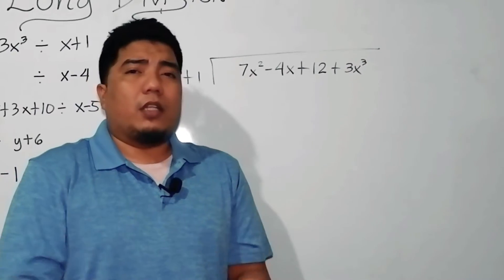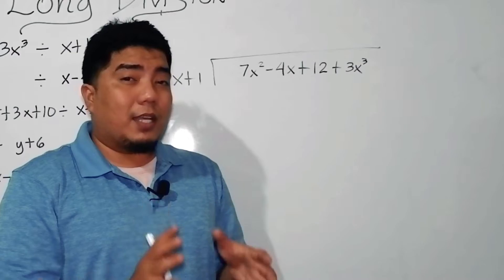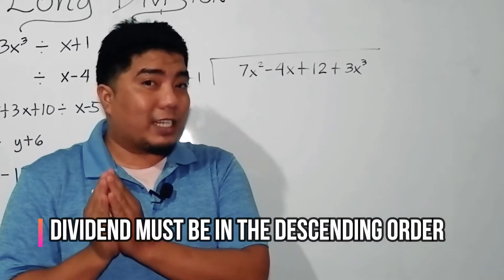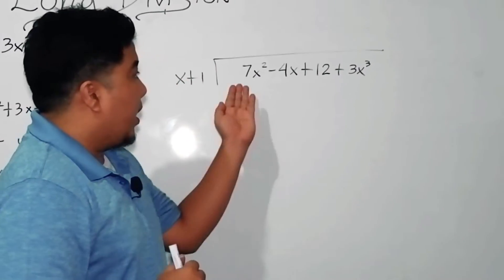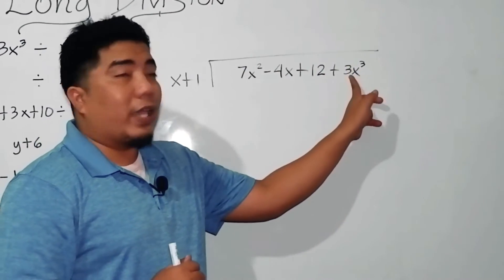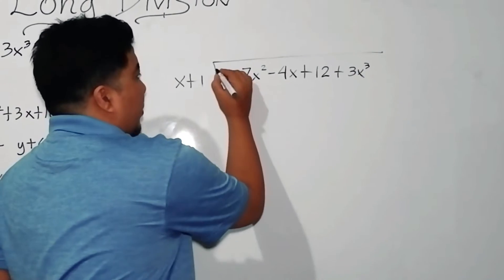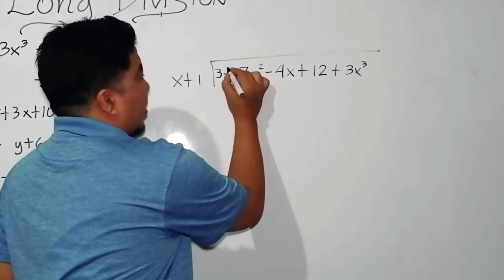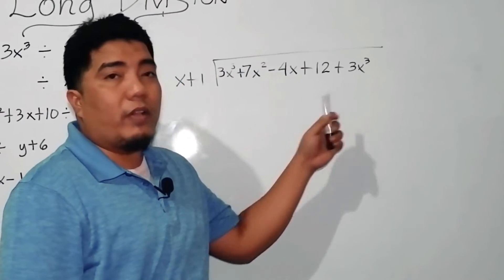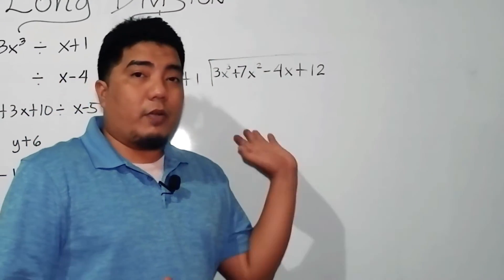The first step before starting your long division is that your dividend must be arranged in decreasing order — meaning you write first your highest degree or highest exponent down to the lowest exponent. Observing our dividend here, the highest exponent is located in this part, so we will transfer it to the front. So let's write 3x cubed plus 7x squared minus 4x plus 12. This is now already arranged.